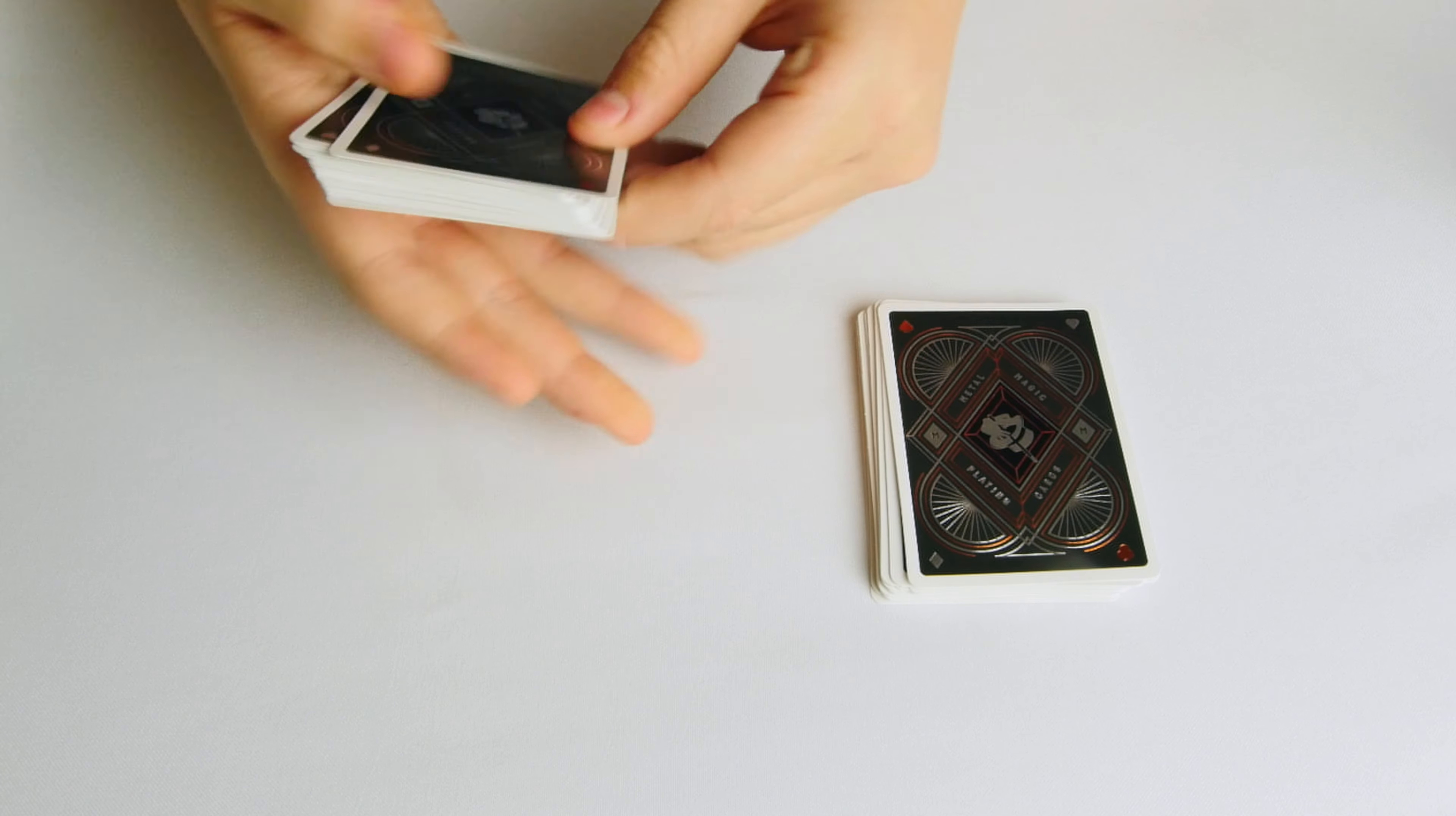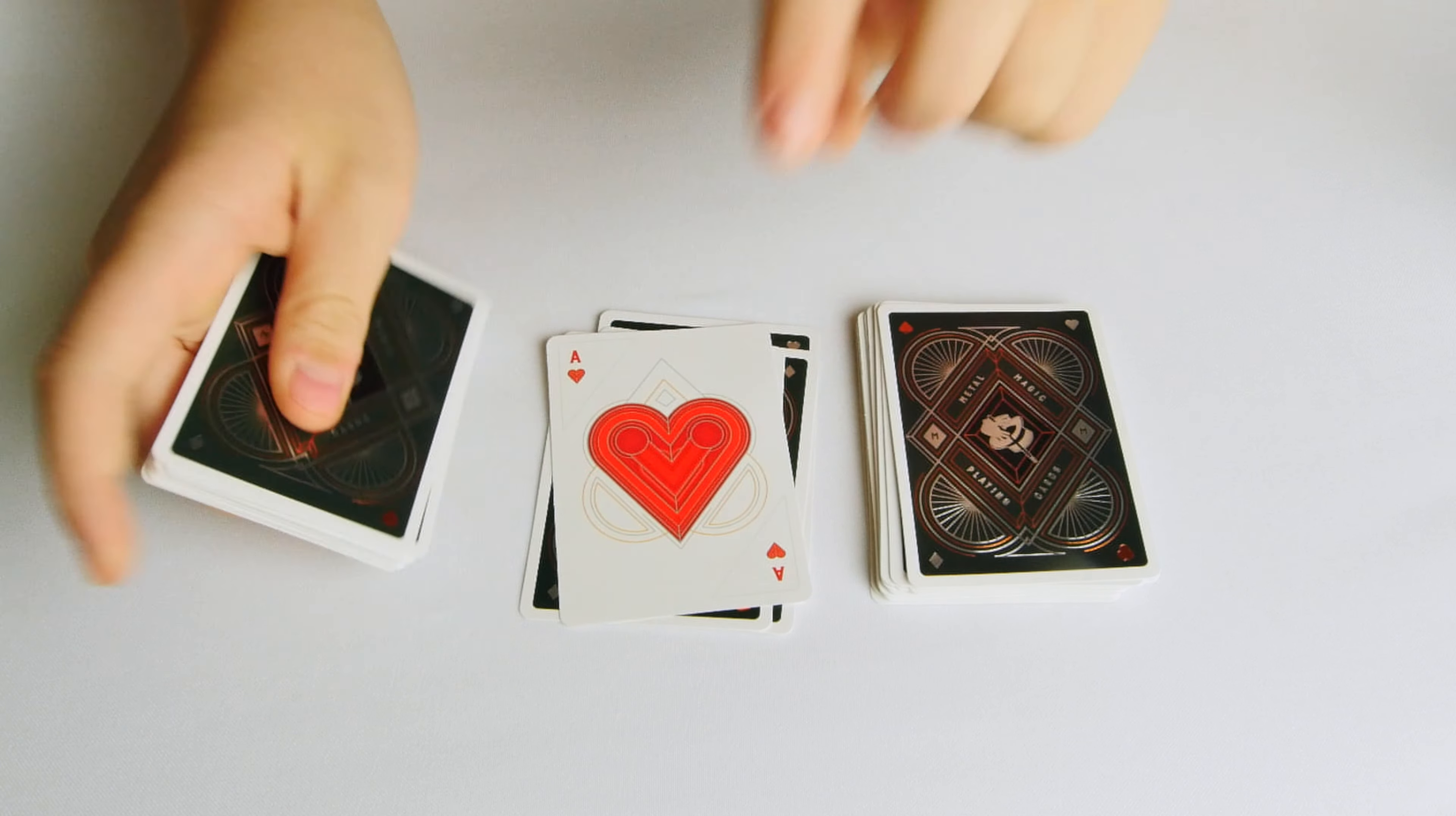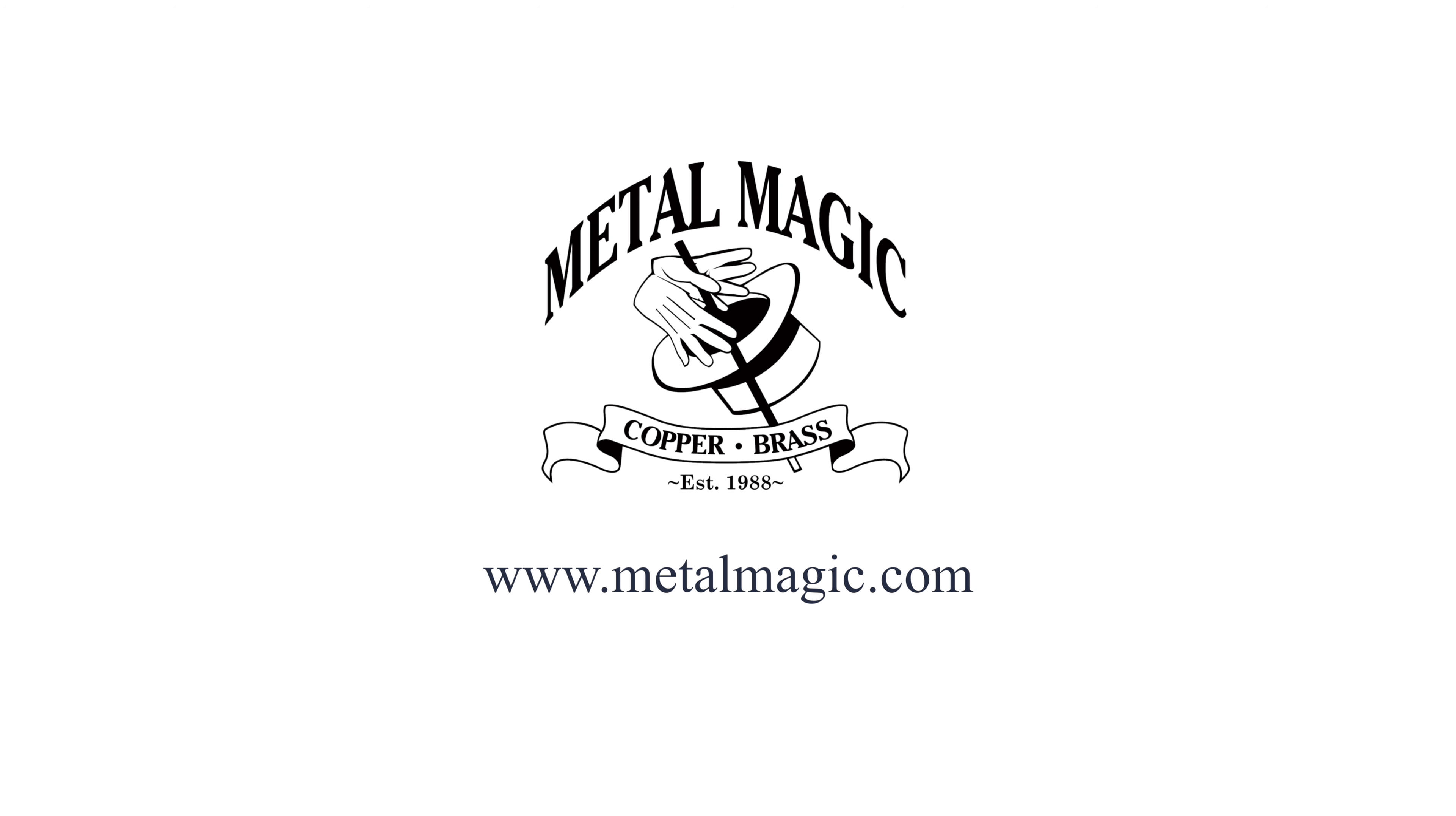Let's count them out for the audience. One, two, three, boom. There's your Ace of Hearts, and that's how it's done. One, two, three.